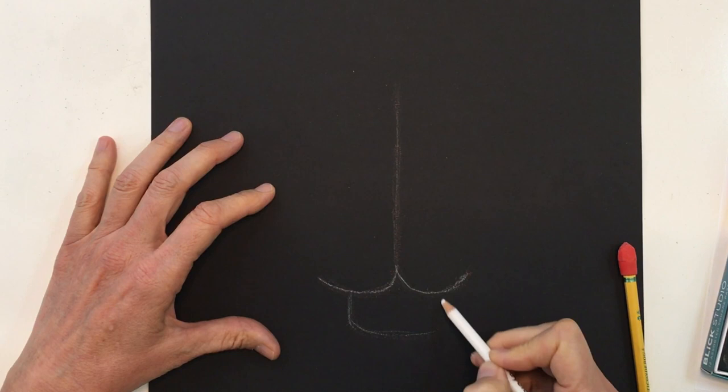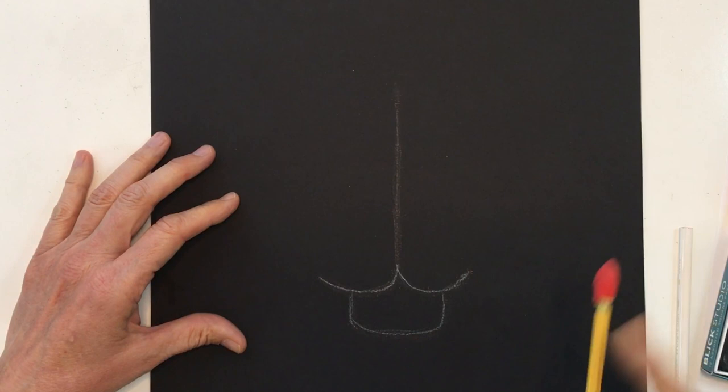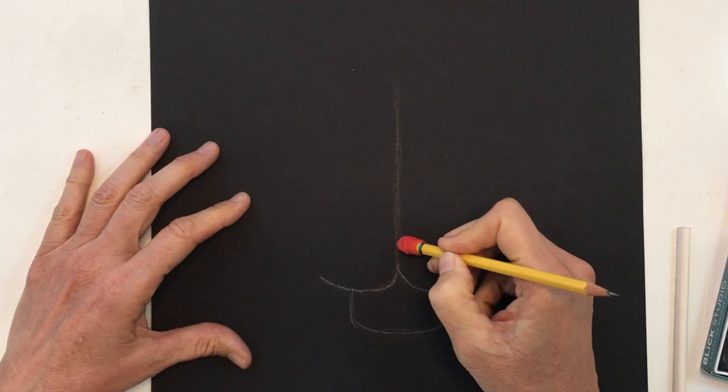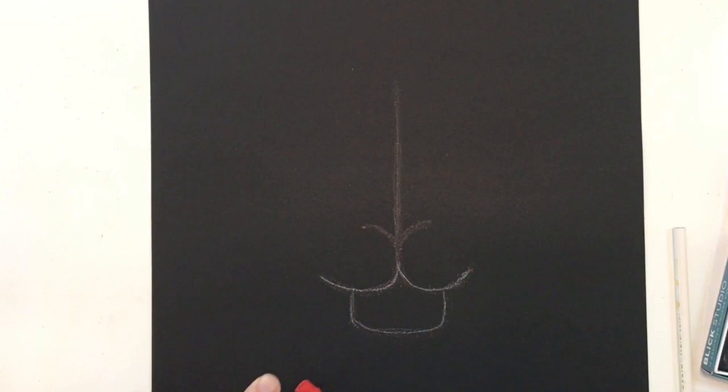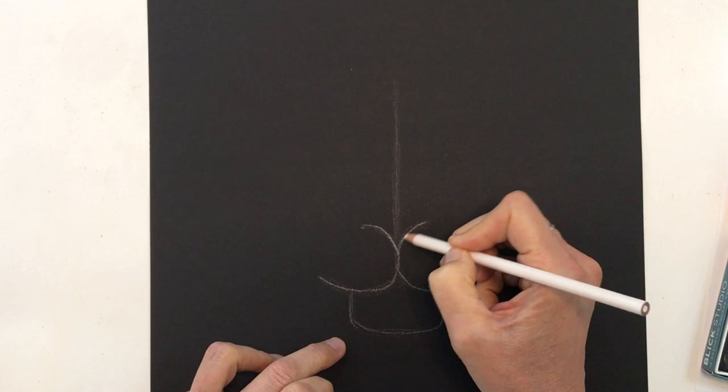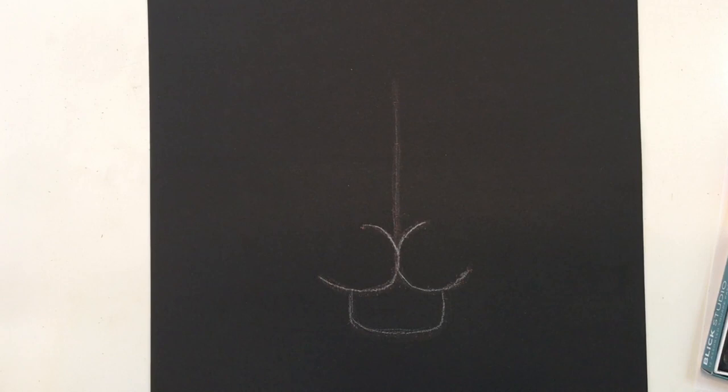Now start putting in the lion's nose. Come a little ways up the center line and make a curved V shape — not a straight V, a slightly curved one. You want it to slightly curve out on each side. Then curve it up a little bit at the top.